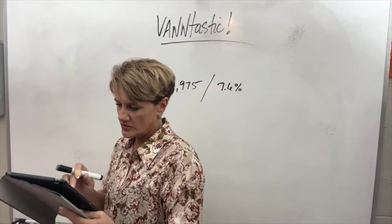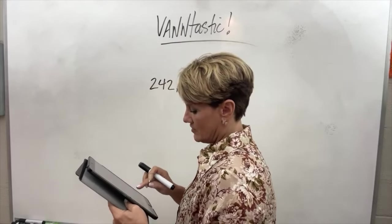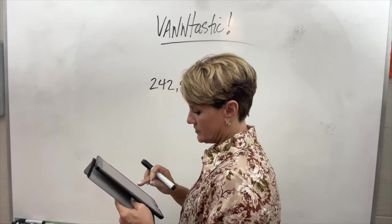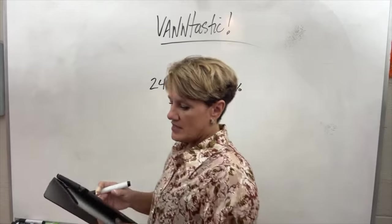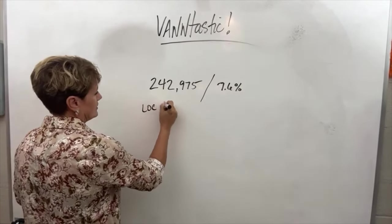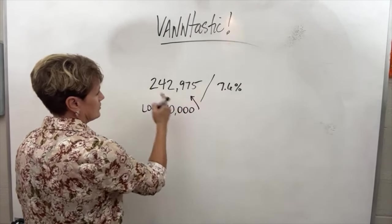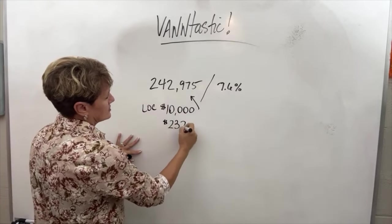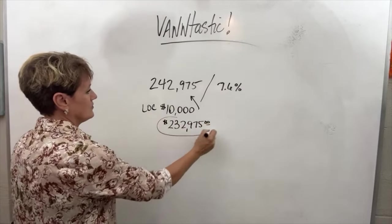So we're going to get our Carl's mortgage calculator and we're going to put in $242,975 at 7.6%. Okay, here we go. So they are a year in. If he used a line of credit to put $10,000 onto this, so he wants it to be $232,975.